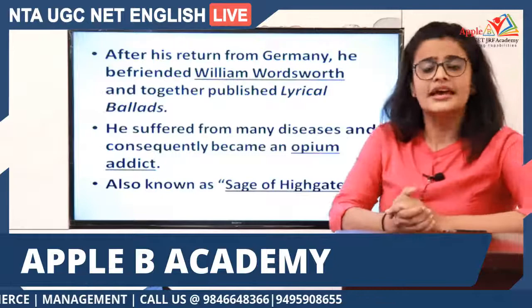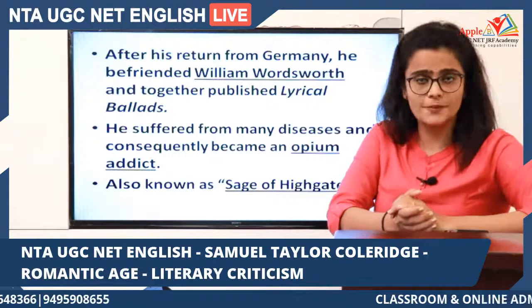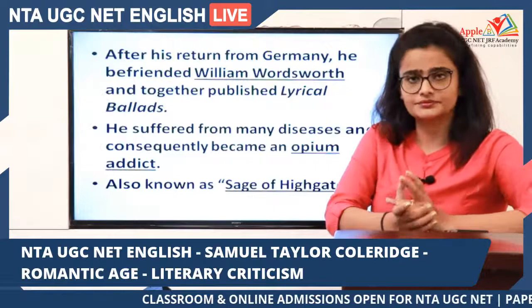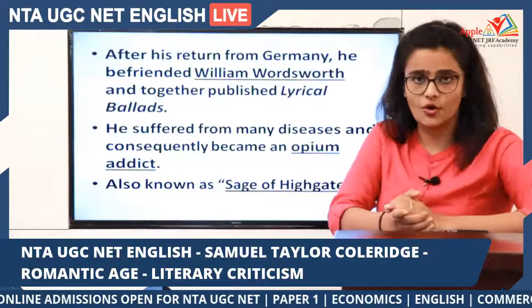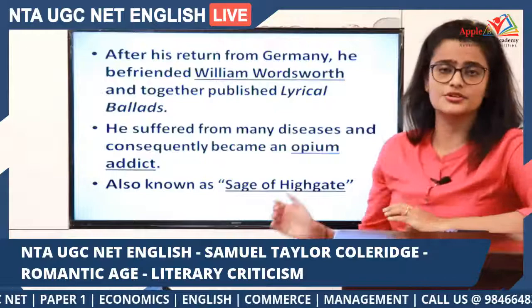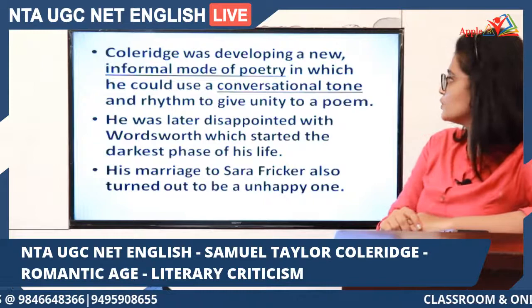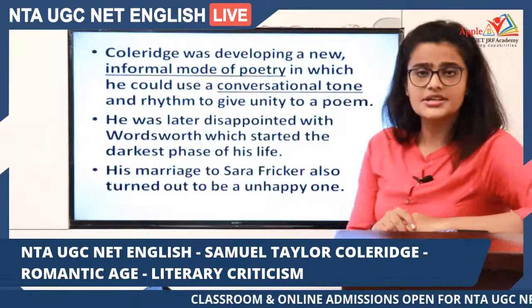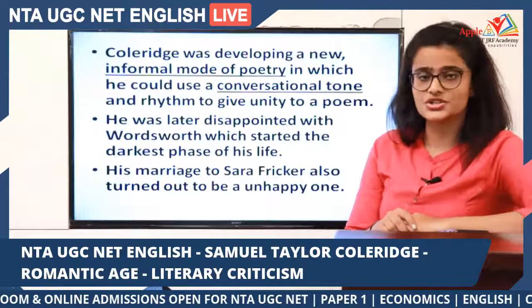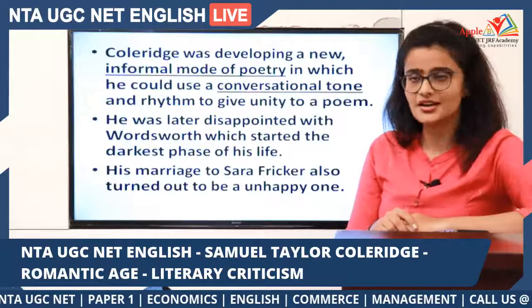Coleridge suffered from many diseases and took opium for relief, later becoming an opium addict. Many of his writings, like Christabel and Kubla Khan, were written under opium influence. He was also known as the Sage of Highgate and was a theologian. Coleridge was developing a new informal mode of poetry using a conversational tone and rhythm to give unity to a poem.